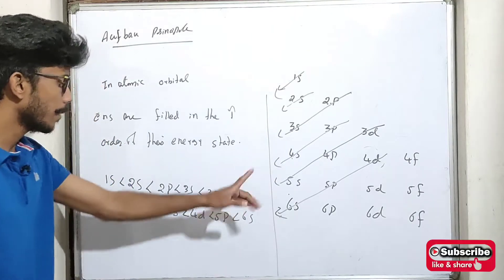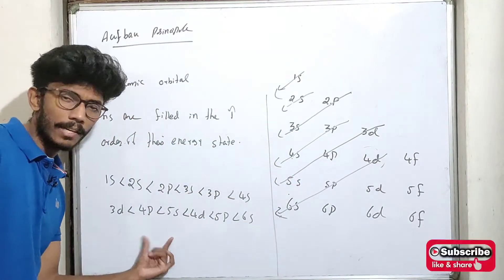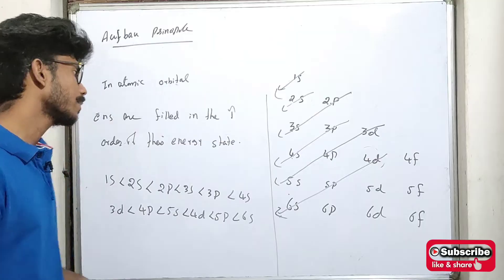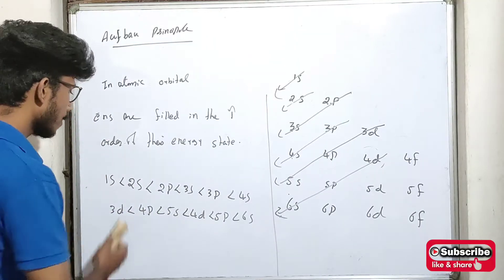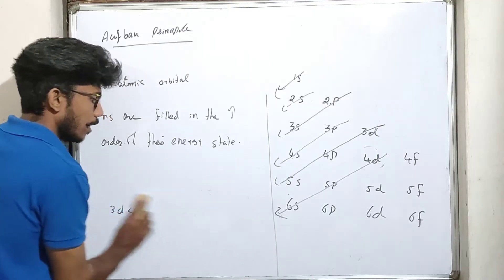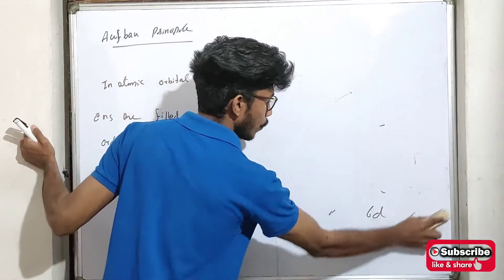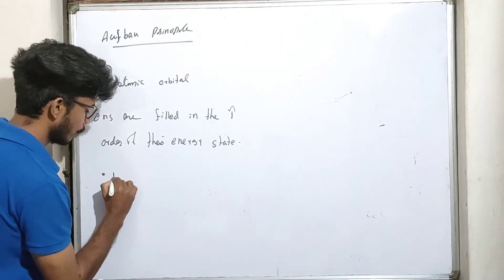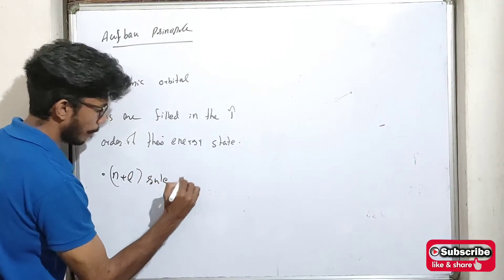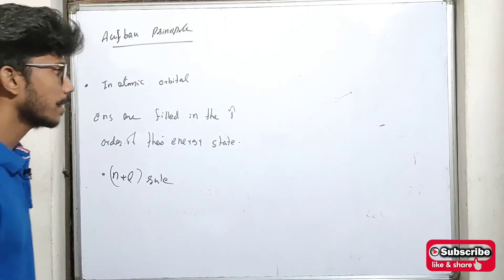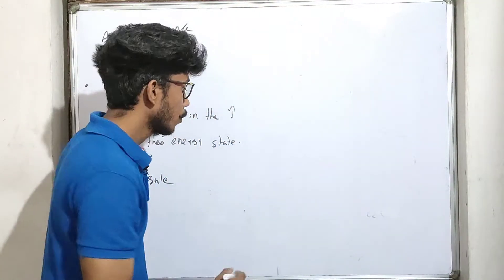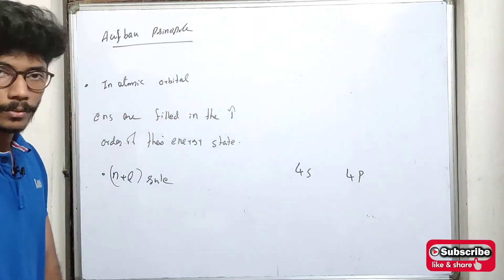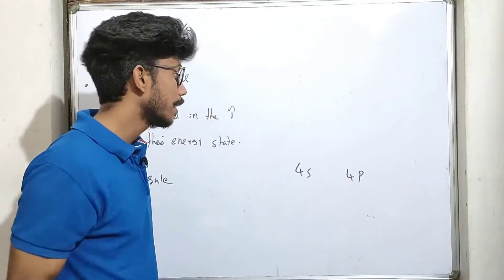This is clear. This is called the E-figure or Aufbau Principle. A special case of the Aufbau rule is called the N plus L rule. If you want to show the Aufbau Principle, we use the N+L value — for example, for 4s and 4p.